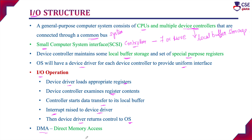In that case, we can go for direct memory access (DMA). Whenever a task needs to be performed, initially the buffers, pointers, and counters for the IO devices are set up. Once set up, the device controller transfers an entire block of data directly to or from its own buffer storage to memory without the intervention of the CPU. That is called direct memory access.